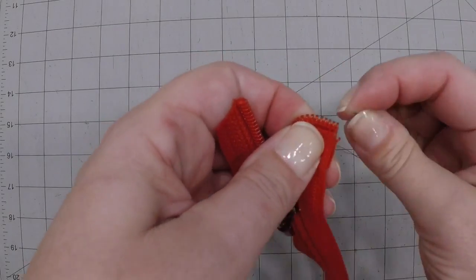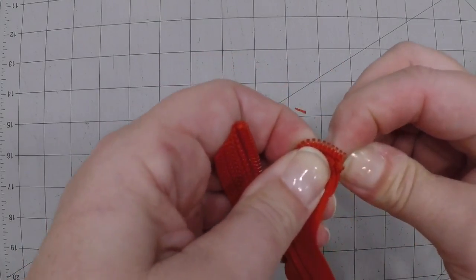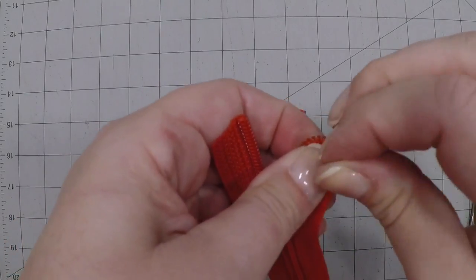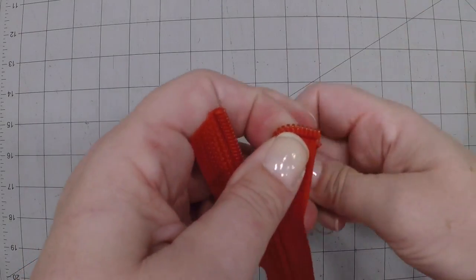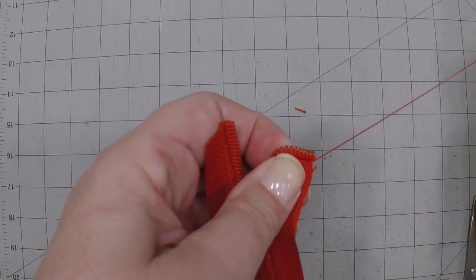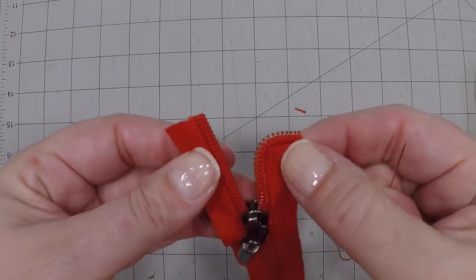I'm going to put my thread through the teeth, come around, and I'm just going to take a couple of loops here. Just enough that it'll hold it down and it holds it nice and even right there.